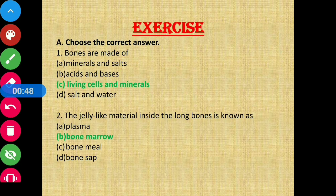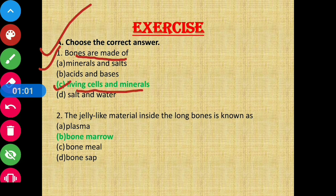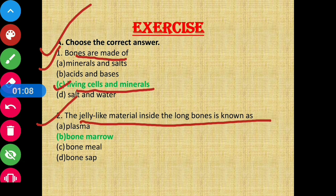Let us first quickly go through section A, which says choose the correct answer. Question number 1: bones are made of — they are made of option C, living cells and minerals. Question number 2: the jelly-like material inside the long bones is known as — the jelly-like substance present in long bones — those are known as option B, bone marrow.